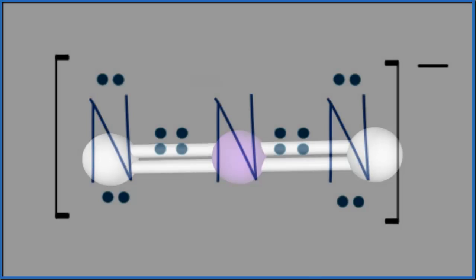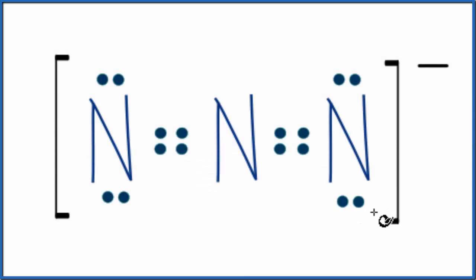Let's go back to our Lewis structure. If we look at our Lewis structure, there are two other ways we can determine the molecular geometry for this azide ion.